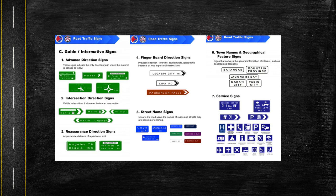Third is reassurance direction signs, which show the approximate distance of a particular exit and are usually seen in expressways. Fourth is fingerboard direction signs, which provide direction to towns, tourist spots, and geographic interest at less important intersections. Fifth is street name signs, which simply inform road users of what street they are currently on.